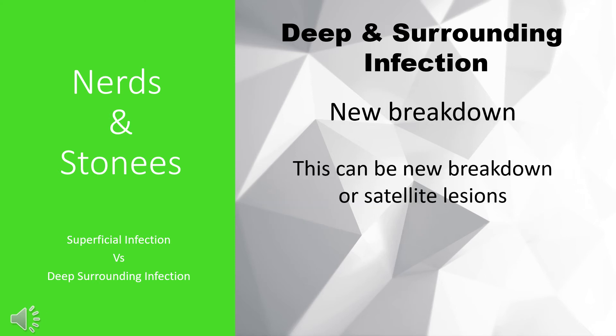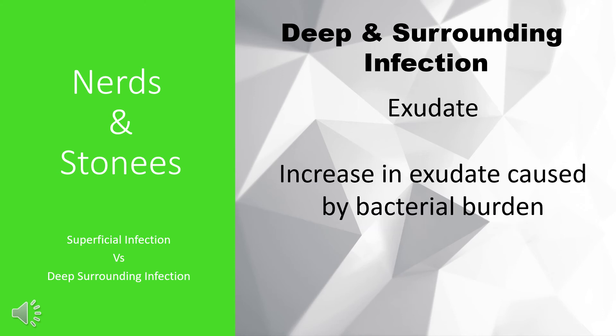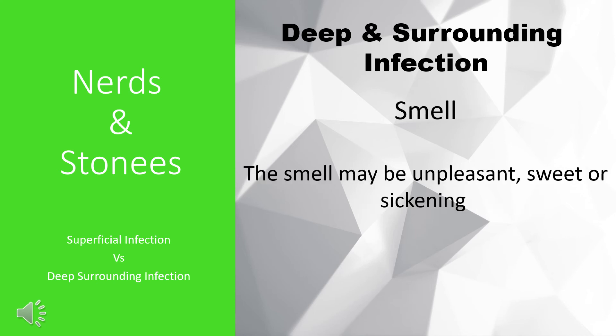New breakdown may be in the wound base or satellite lesions around the wound. Arrhythmia is red peri-wound tissue, and edema is swelling in the peri-wound. An increase in exudate can be caused by bacterial burden. The smell may be unpleasant, sweet, or sickening.